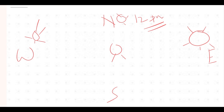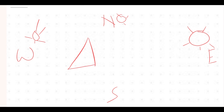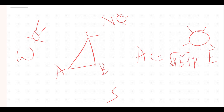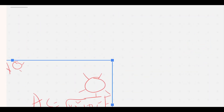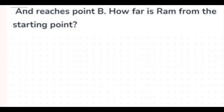One more thing to remember is the Pythagorean rule. If we have a right triangle with sides AB, BC, and hypotenuse AC, then AC equals the square root of AB² plus BC². Just remember this formula.